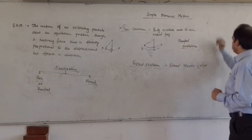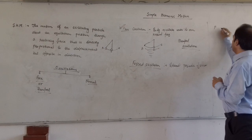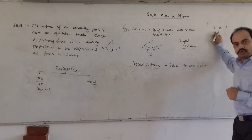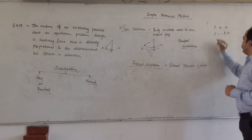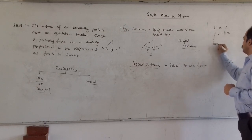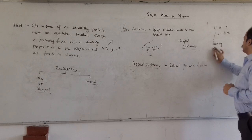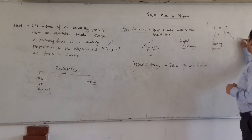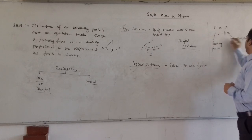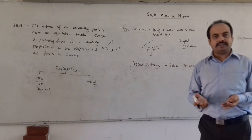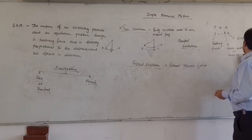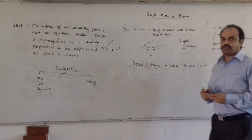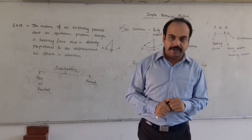We can also write that in simple harmonic motion the force is directly proportional to x. This restoring force can be written as F = −kx, where F is the restoring force, x is the displacement, and k is known as the force constant or restoring constant. The negative sign shows that the restoring force is opposite to the displacement.